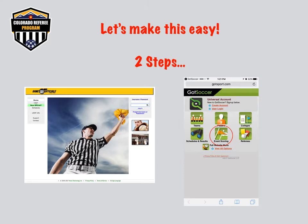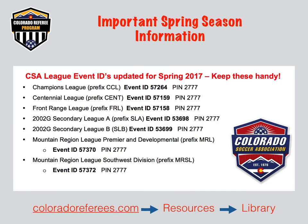Youth league game reports require two steps: Gameofficials.net and GotSoccer. It can be done quick and easy, especially when you only have a final score to report. All youth games must be reported in Gameofficials.net, and scores must be entered in GotSoccer for all games that have a game number prefix as listed. Keep this information handy throughout the season.